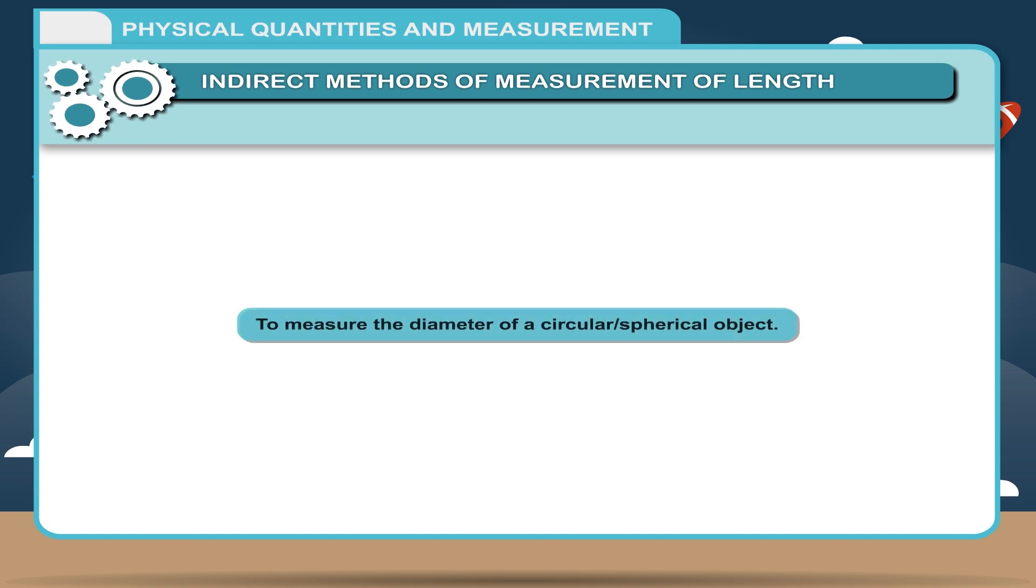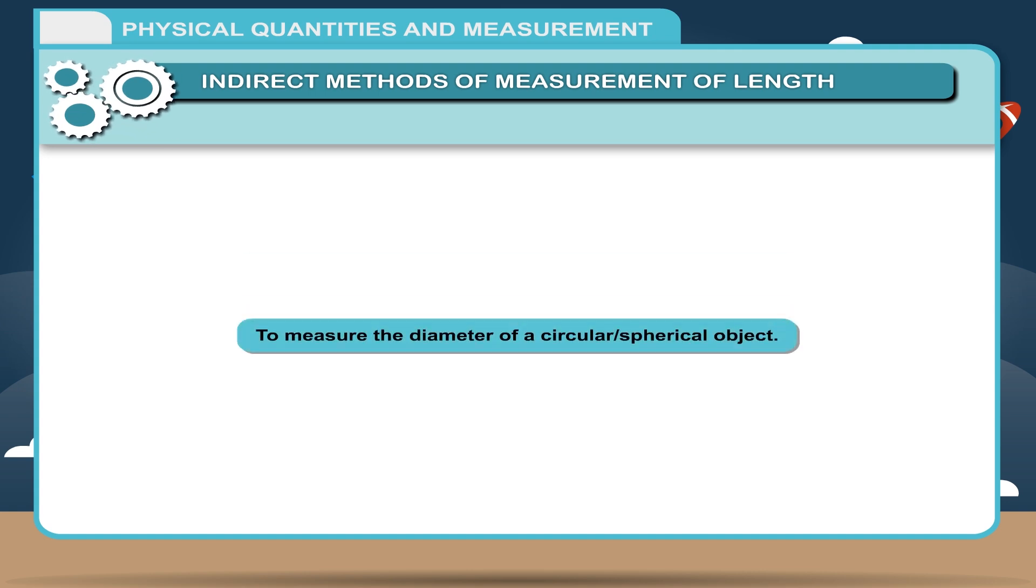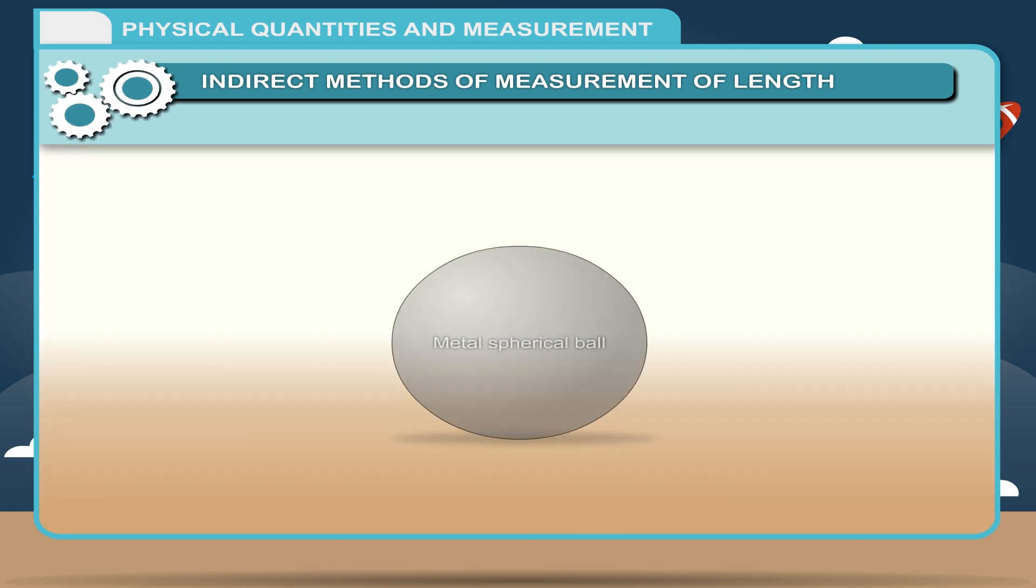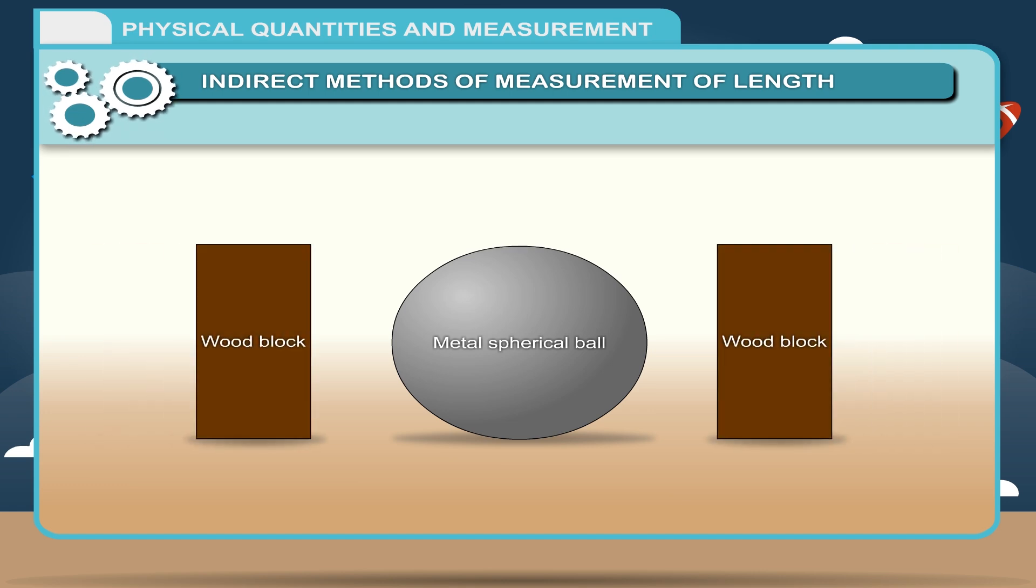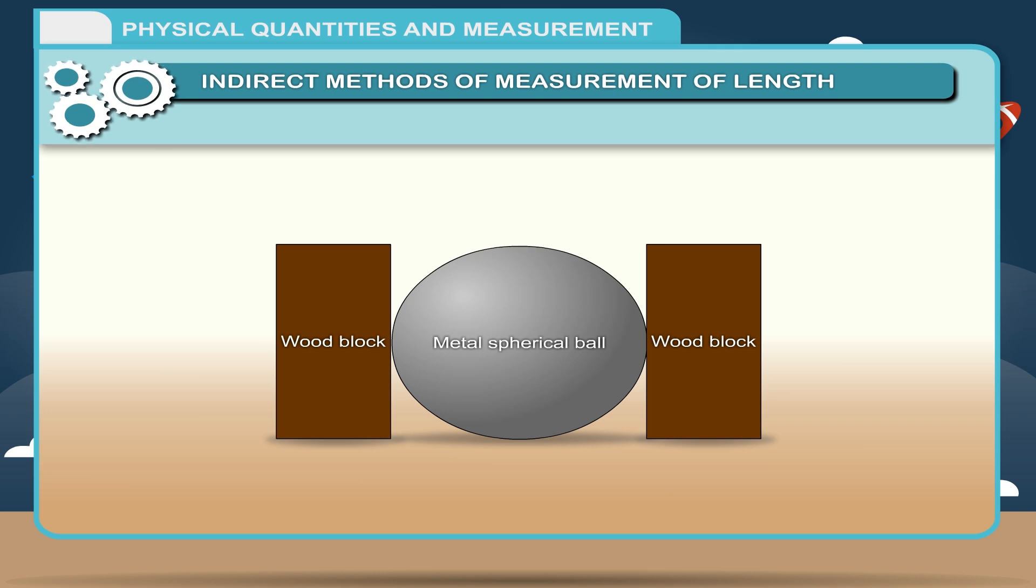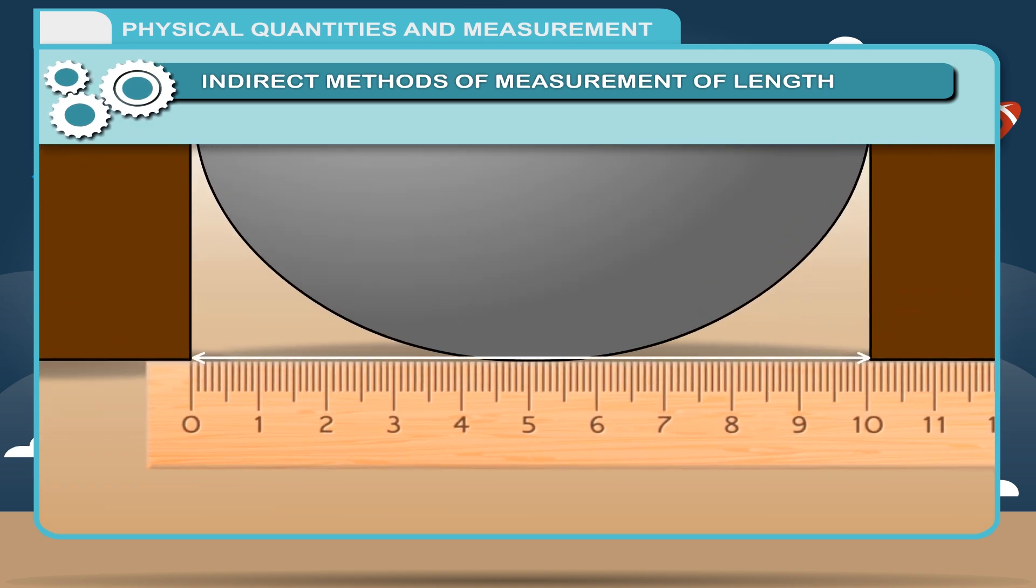Activity: To measure the diameter of a circular or spherical object. Take a metal spherical ball and two wooden blocks. Place the spherical ball between two blocks. Mark the point of contact of sphere with the blocks. Using a ruler, measure the distance between the inner faces of the two blocks which are in contact with the sphere. If the ruler is placed as shown in the figure, the difference between the two readings on the ruler gives the diameter of the sphere.